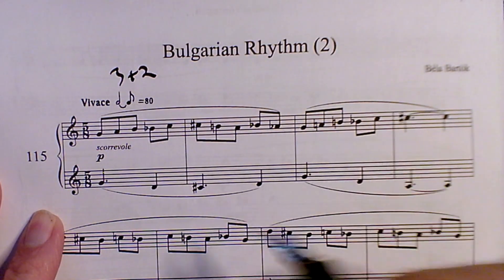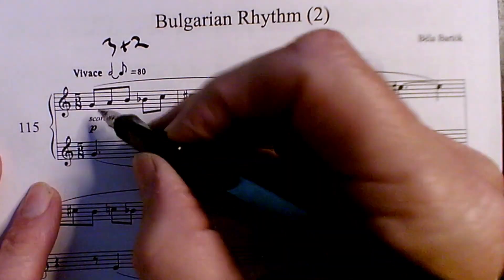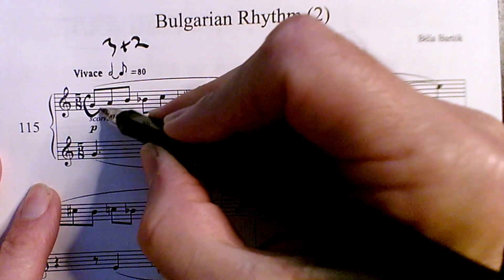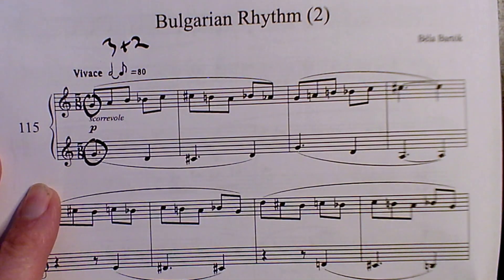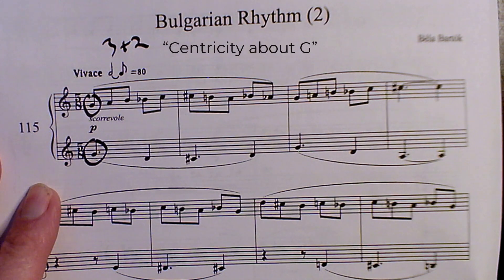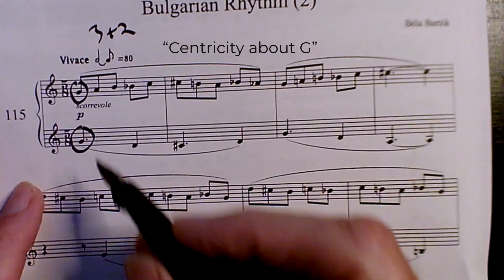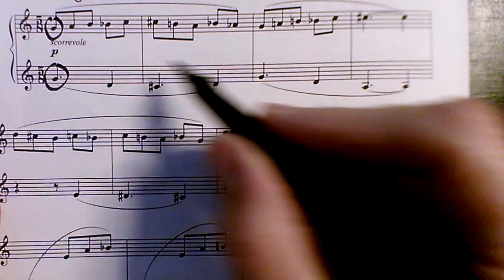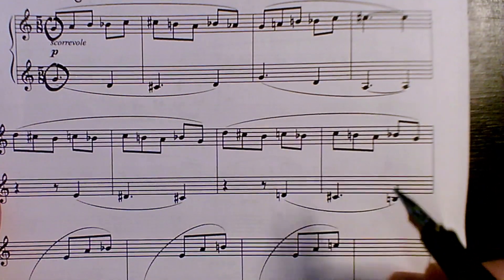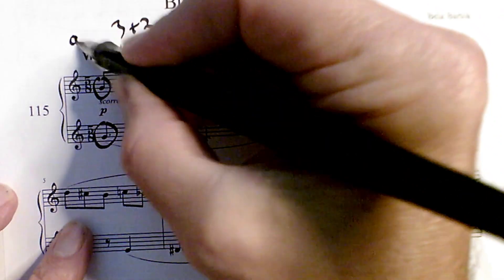Also we notice that the piece seems to have G as a prominent pitch. It might be a little difficult to call this the key of G, so instead we say that it has centricity about the pitch G. And we see that this is rather consistent in the first 8 measures. As a matter of fact, it seems like a self-contained section here, an A section.